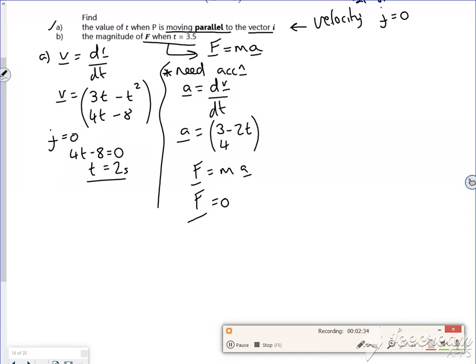So if I use f equals ma, my force is a half times by, so t is 3.5 isn't it? So 3 minus 2 lots of 3.5 and 4. So I've got 3 minus 7, so minus 4. A half of that is minus 2. Then I've got a half of 4 is 2. So that's my force.